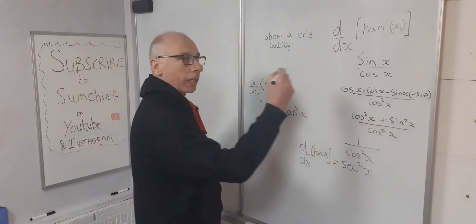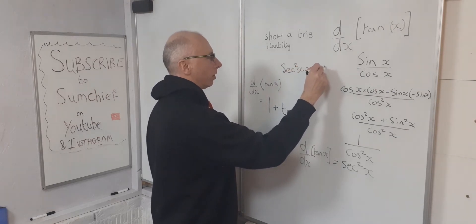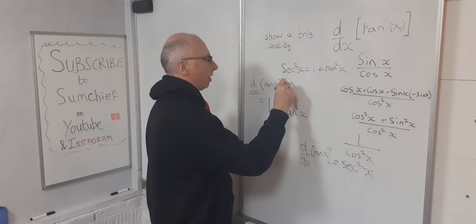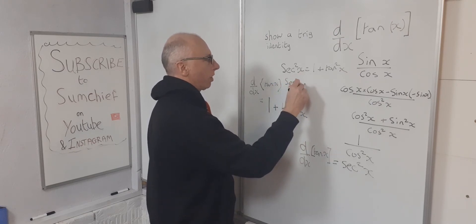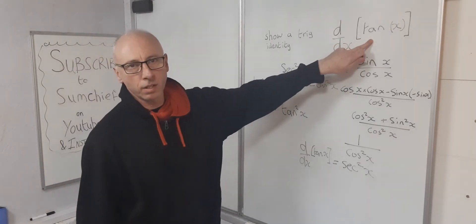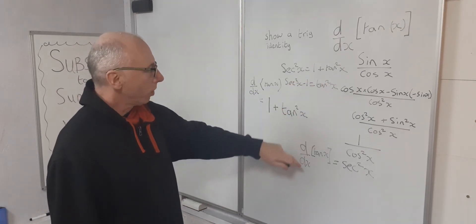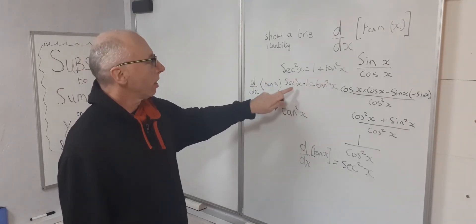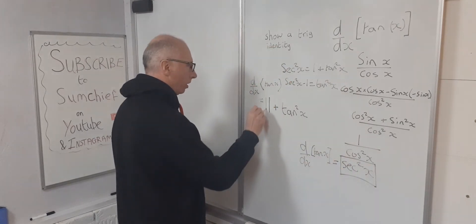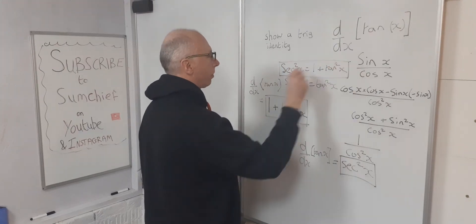So we've got one derivative of tangent x as one plus tan squared x, and another as secant squared x. These two must be the same, so we can say secant squared x equals one plus tan squared x. And by moving the one across, secant squared x minus one equals tan squared x. So by doing the derivative of tangent x, we found that the derivative is secant squared x, and we've shown two trig identities.